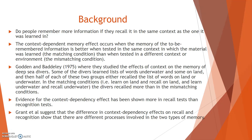Background. Do people remember more information if they recall it in the same context as the one it was learned in? The context-dependent memory effect occurs when memory of the to-be-remembered information is better when tested in the same context in which the material was learned — the matching condition — than when tested in a different context or environment — the mismatching condition.